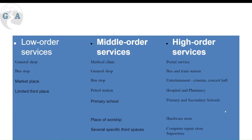Low order services include a general shop, a bus stop, a marketplace, and limited third places — third places being any social spot outside of school, work, or home, such as sports grounds. Middle order services, found in larger settlements outside the rural area, include more general shops, medical clinics, petrol stations, primary schools, and places of worship that facilitate people coming from surrounding rural settlements.